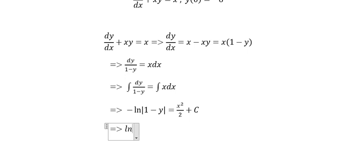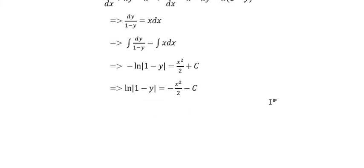We put the negative sign on the right. Later, we put e to the power of ln|1 - y| equal to the other side.